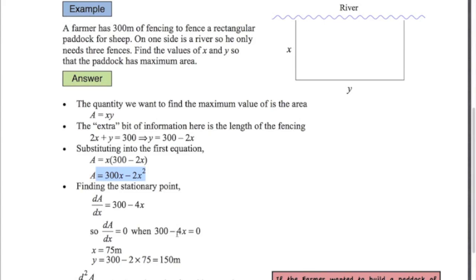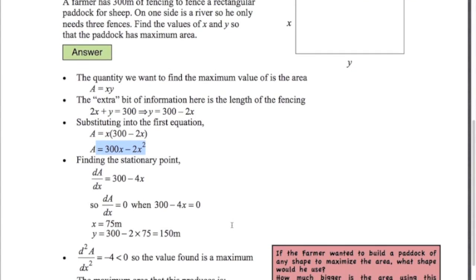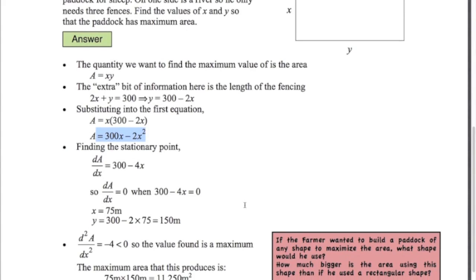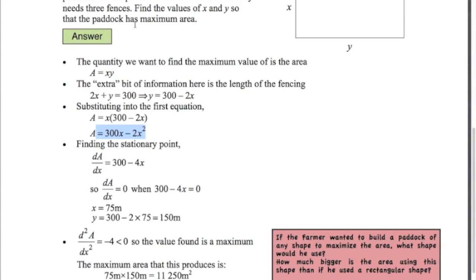So clearly this value we've found is a maximum value. But just to prove it, we're going to use the second derivative test. The second derivative is minus 4 — we don't even need to substitute our value of x in there. It's just minus 4, which is less than zero, so that shows the value we found is a maximum. The paddock has maximum area when x equals 75 and y equals 150. If the question asked us what the actual maximum area is, we could work that out: maximum area equals x times y equals 11,250 meters squared.